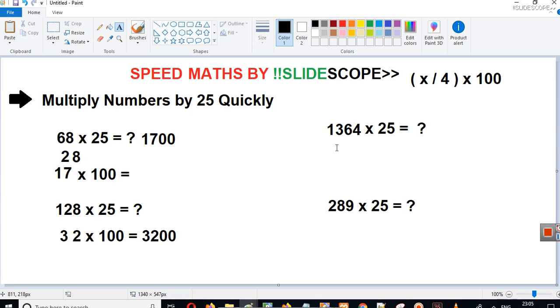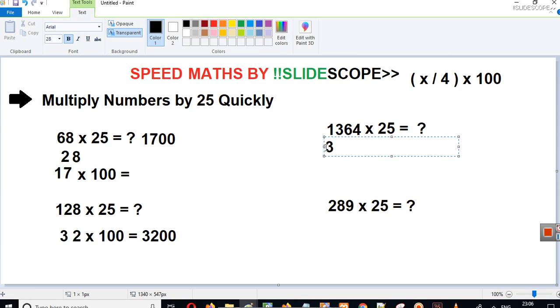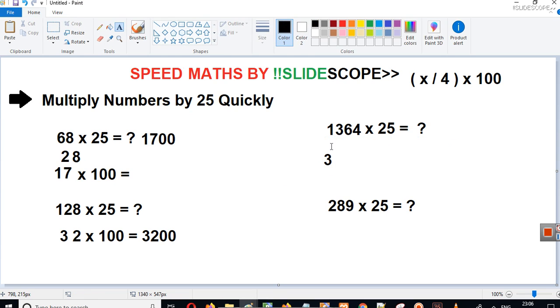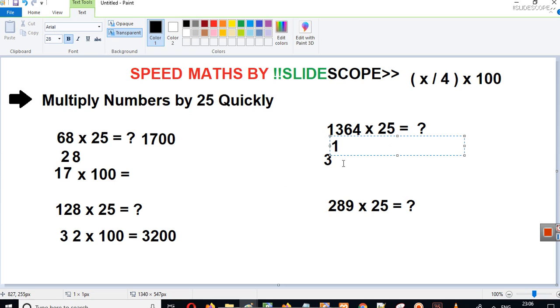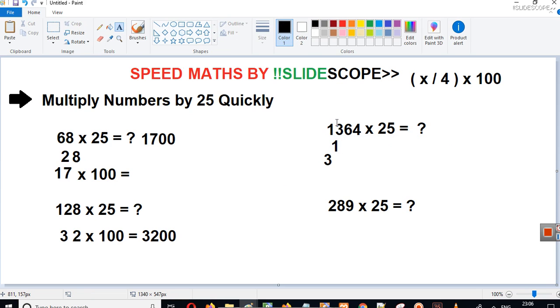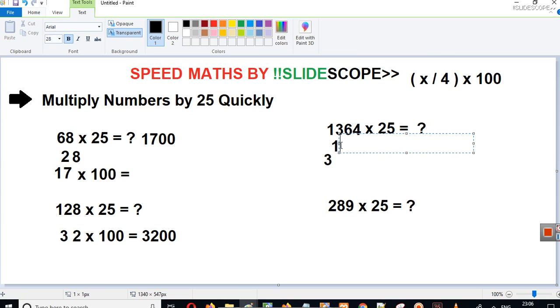We have another example here. This is a 4 digit number, 1, 3, 6, 4. Now here, 4 into 3 is 12. But you can see that 1 will be used as a carry. And so 1 and 6, next digit is 6. So 6, 1 and 6 will be 16. So we will have 4 here. 4 into 4 is 16.